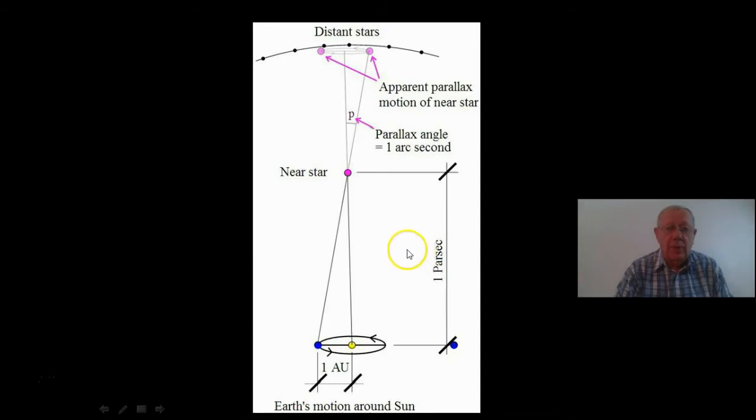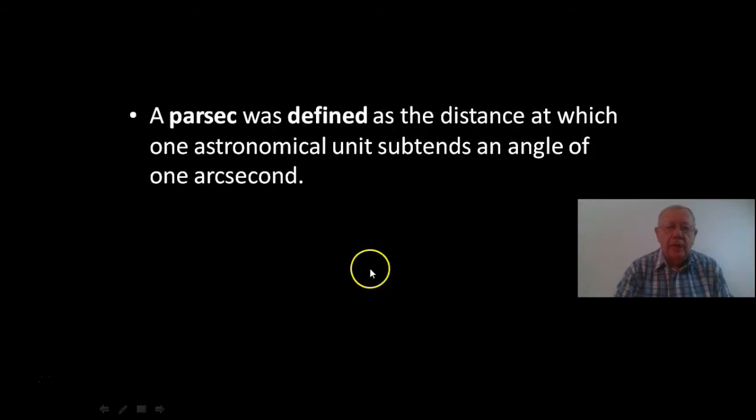It's defined in some respects as this. If I'll move on to the next slide, a parsec was defined as the distance at which one astronomical unit subtends or stands on an angle of one arc second.